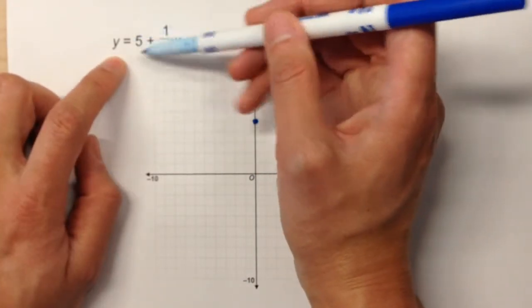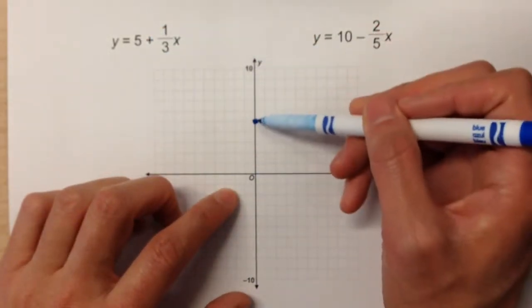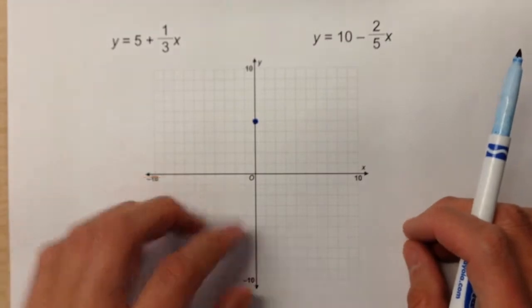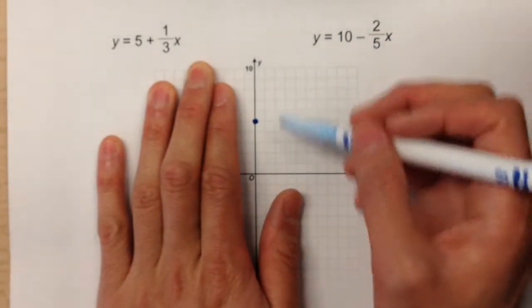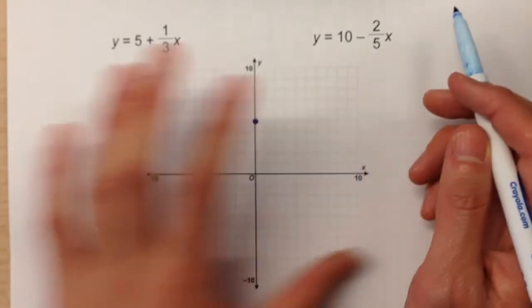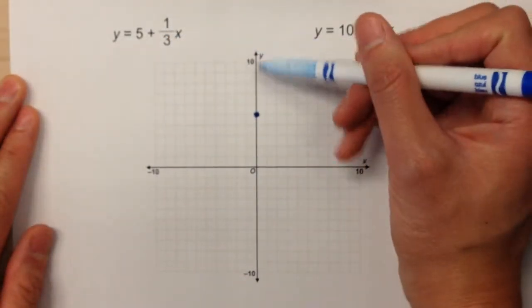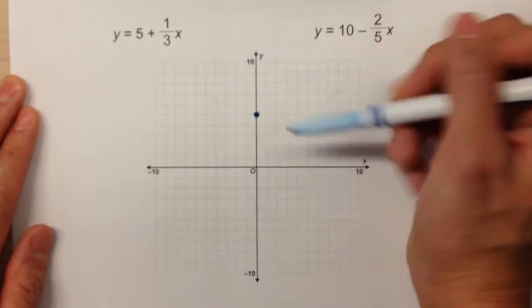So we're gonna start by plotting the five on our y-axis. It's gonna be right there. Now I know we've been just focusing on the positive part of the coordinate grid up until now, but now we're gonna open everything up. So just remember your starting point, your y-intercept, is always plotted on the y-axis.